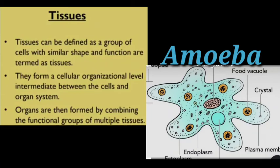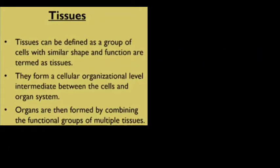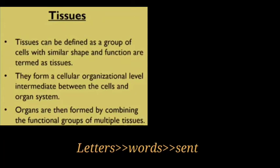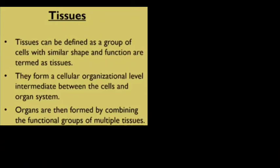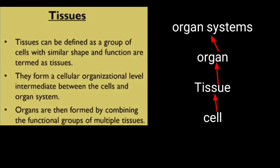In the case of amoeba and other unicellular organisms, all functions are performed by organelles of that single cell. However, most organisms are multicellular. Groups of cells combine together to perform various functions of the body — just like letters combine to make words, words make sentences, and sentences make a whole textbook. The organization of the body follows a definite hierarchy. A group of cells having the same origin, same structure, and same function is called a tissue.